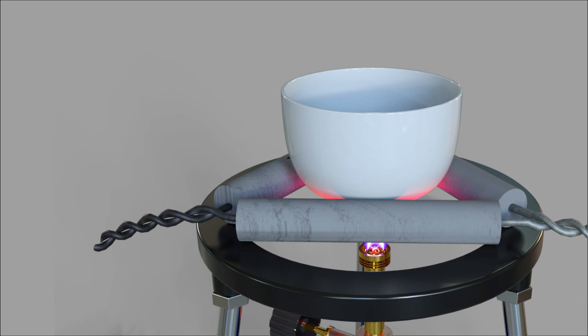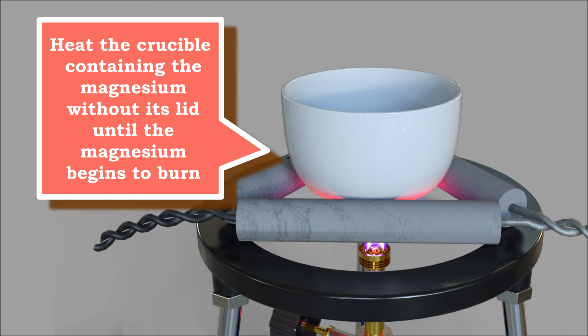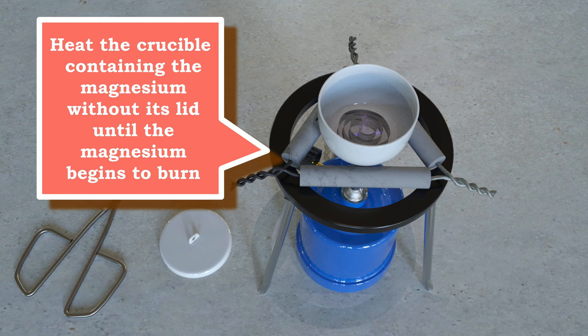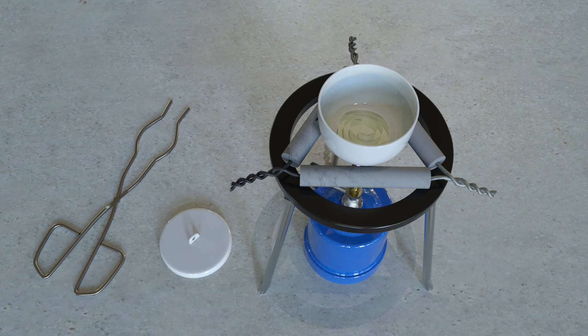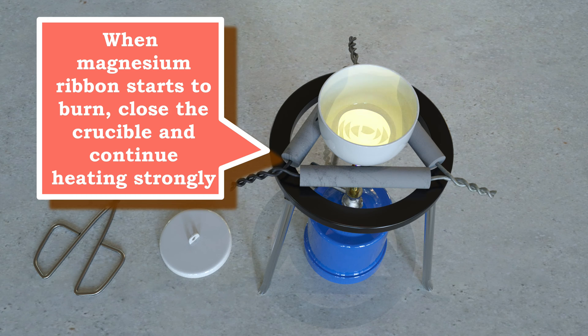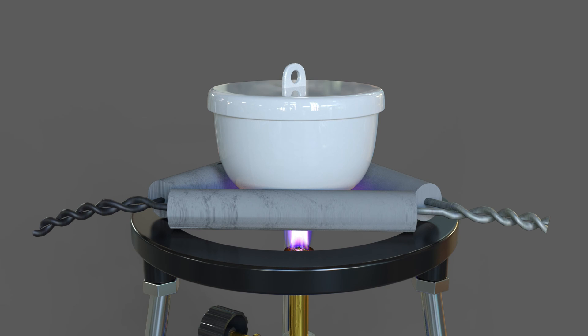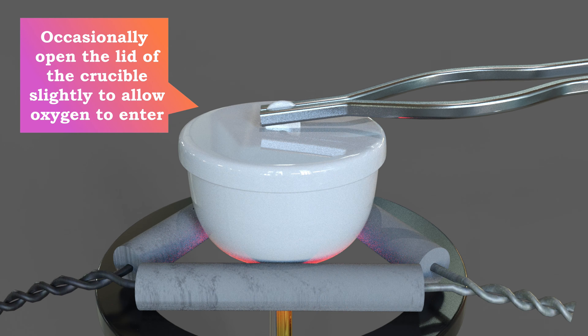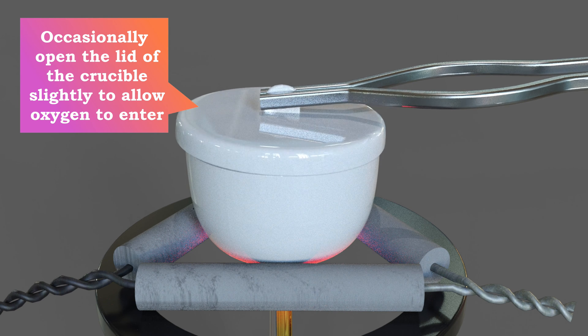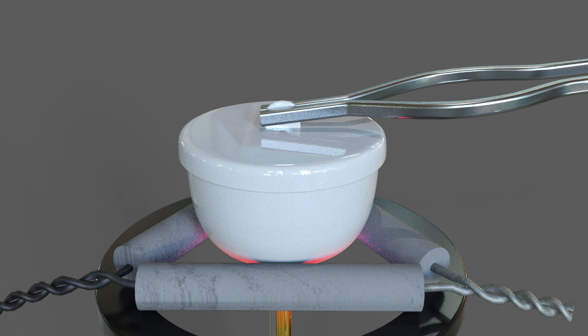Heat the crucible containing the magnesium without its lid. When magnesium ribbon starts to burn, close the crucible with its lid and continue heating strongly. Occasionally open the lid of the crucible slightly to allow oxygen to enter and react with the magnesium. Minimize the release of white fumes of magnesium oxide.